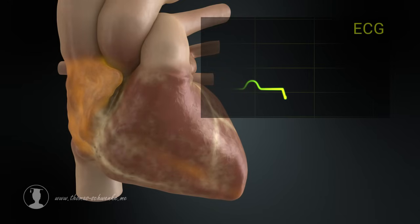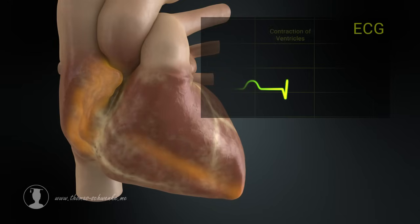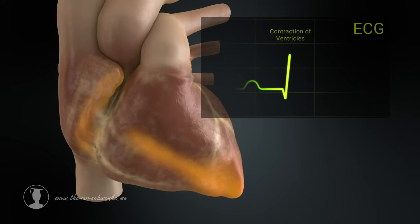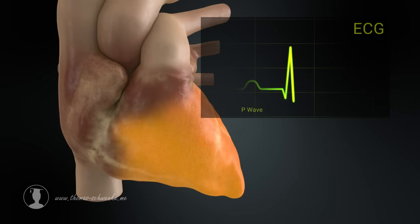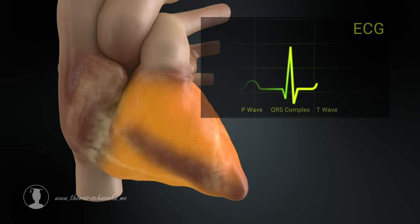The stimulation of the ventricles through the atrioventricular node is represented by three spikes. The first wave is called the P wave and the three graphical deflections the QRS complex. The last wave is the T wave, which represents the recovery of the ventricles.